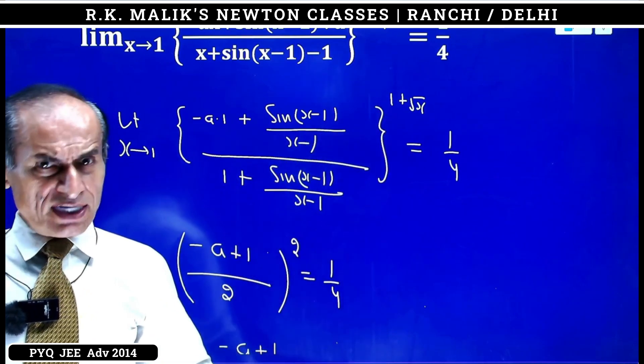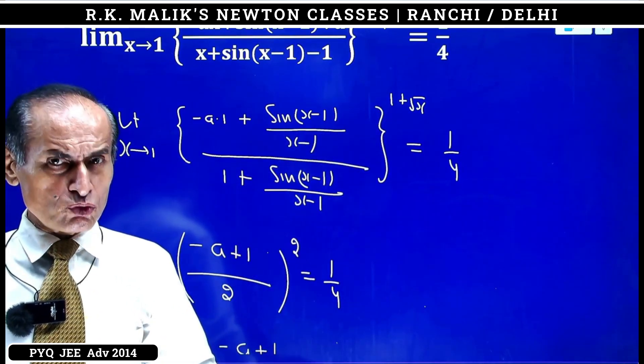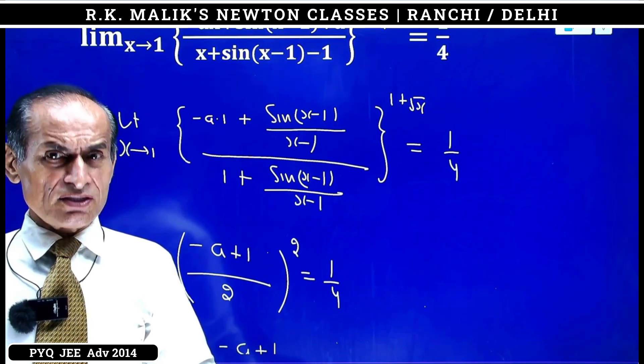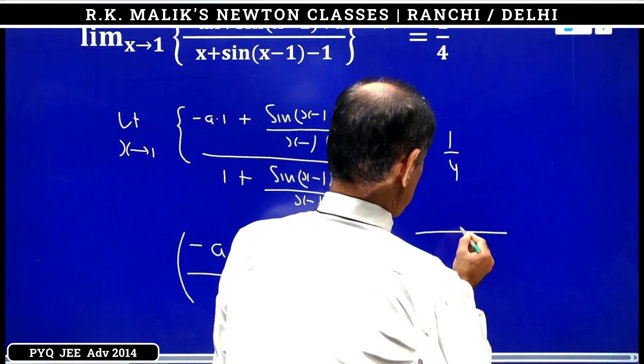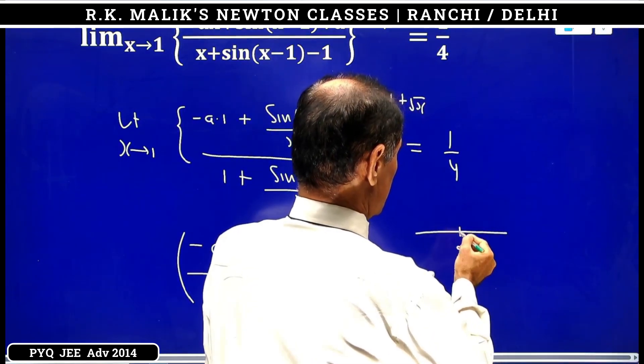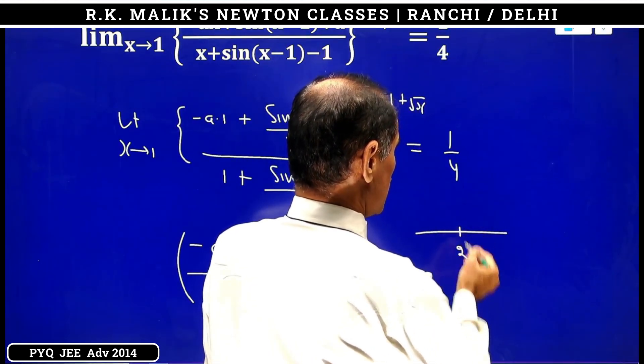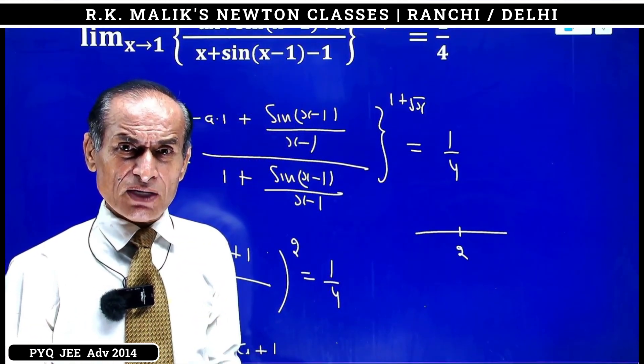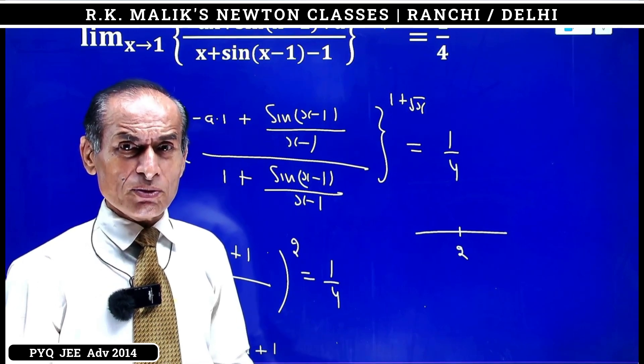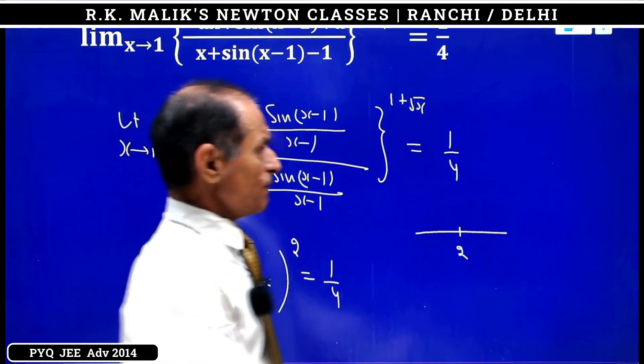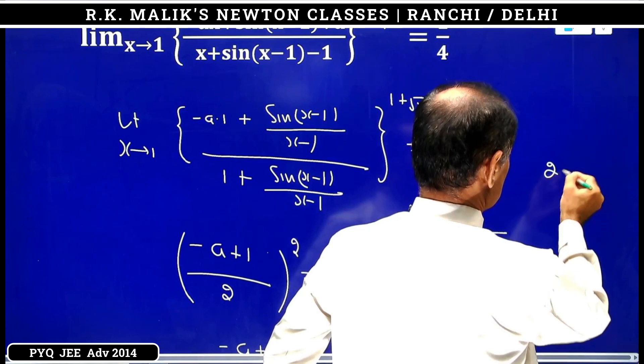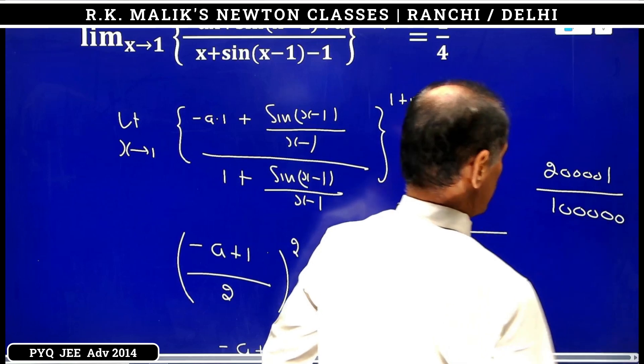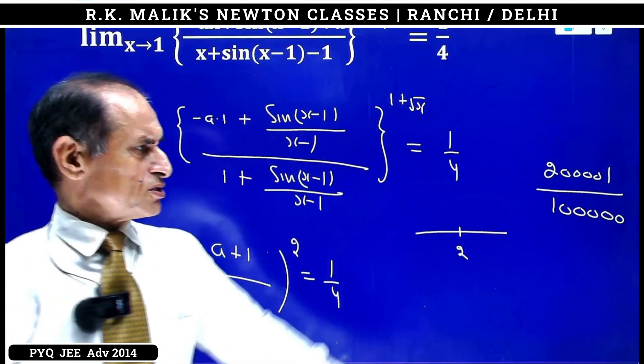The power is tending to 2, but notice the power is not exactly 2. Whether approaching from this side or that side, near 2 there are infinite number of irrational numbers, and near 2 there are infinite irrational numbers whose numerator is odd and denominator is even. For example, 20001 upon 10000 is very near to 2.